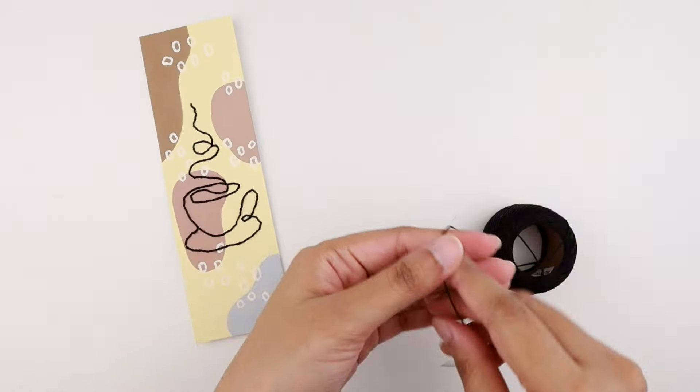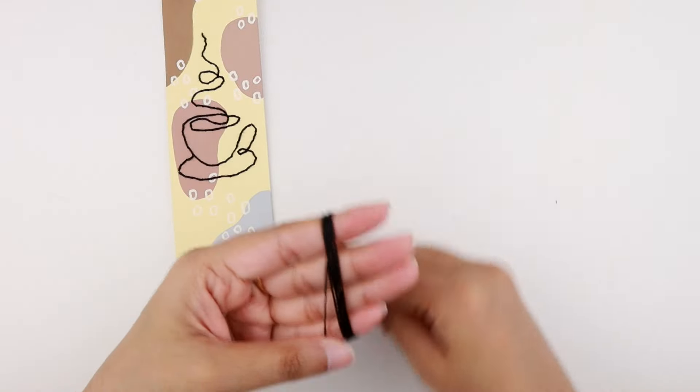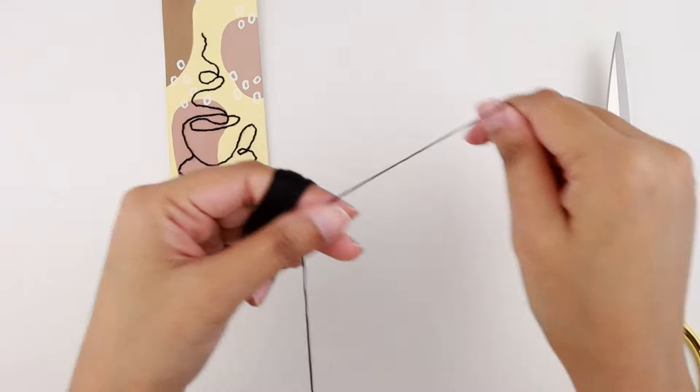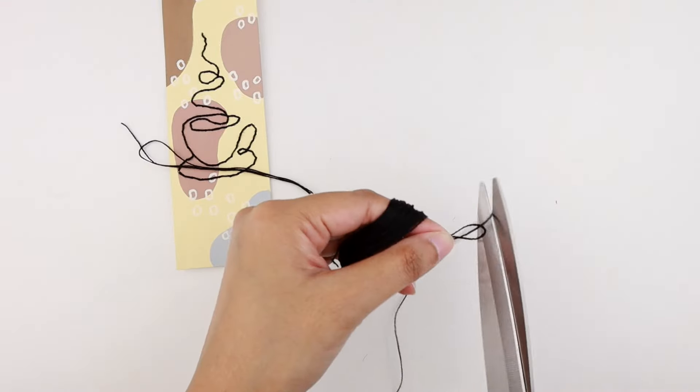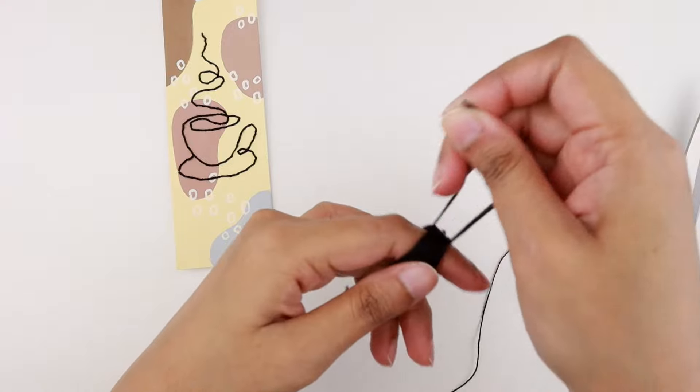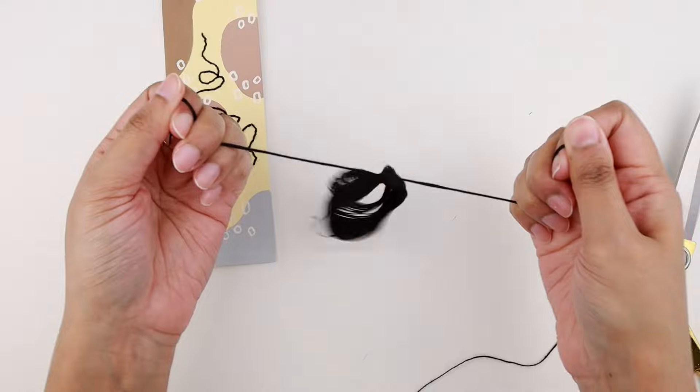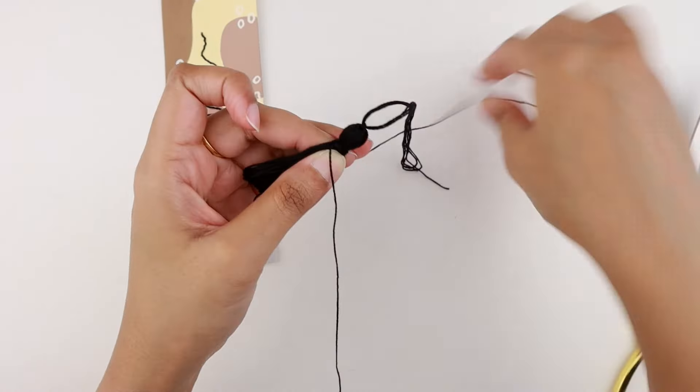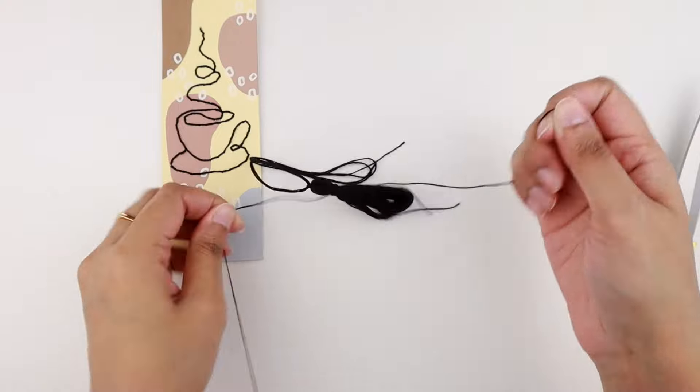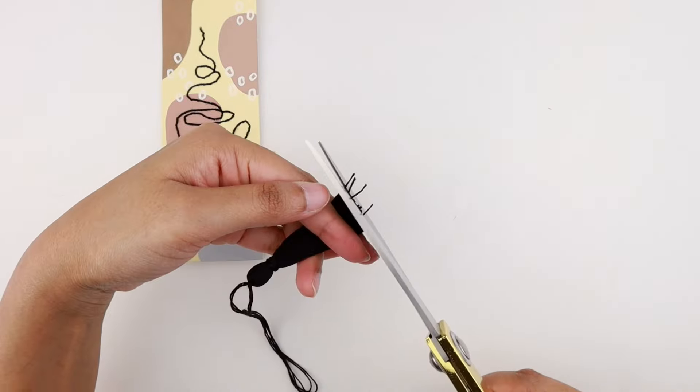We are also going to make a tassel for this bookmark. So I'm wrapping black embroidery floss around my fingers for about 50 times. Then I'm taking a piece of thread and tripling it to make it thicker. I'm sending it under the loops and tying a double knot. Now I'm making the head of the tassel by wrapping a piece of thread for 10 to 15 times and then tying a double knot. To finish off, I'm cutting the loops and trimming the ends to level them.